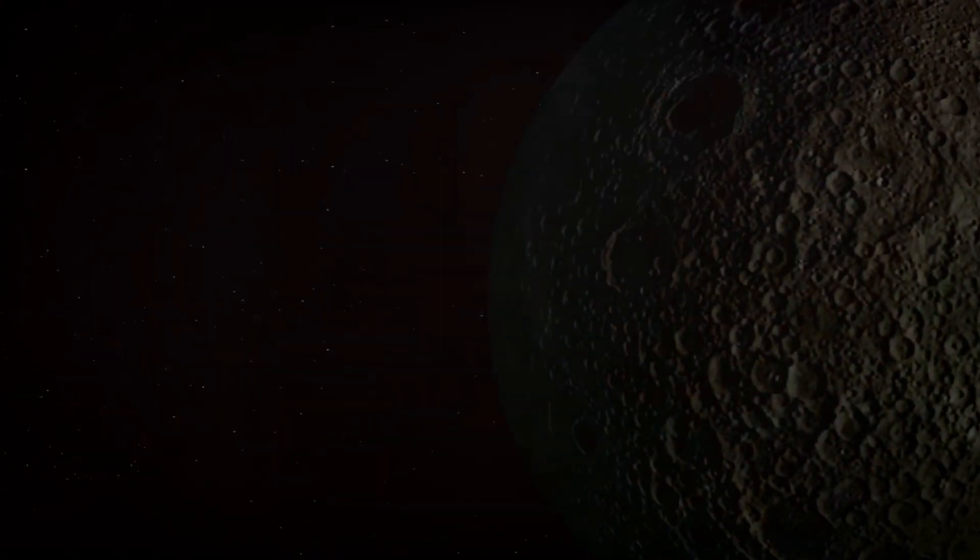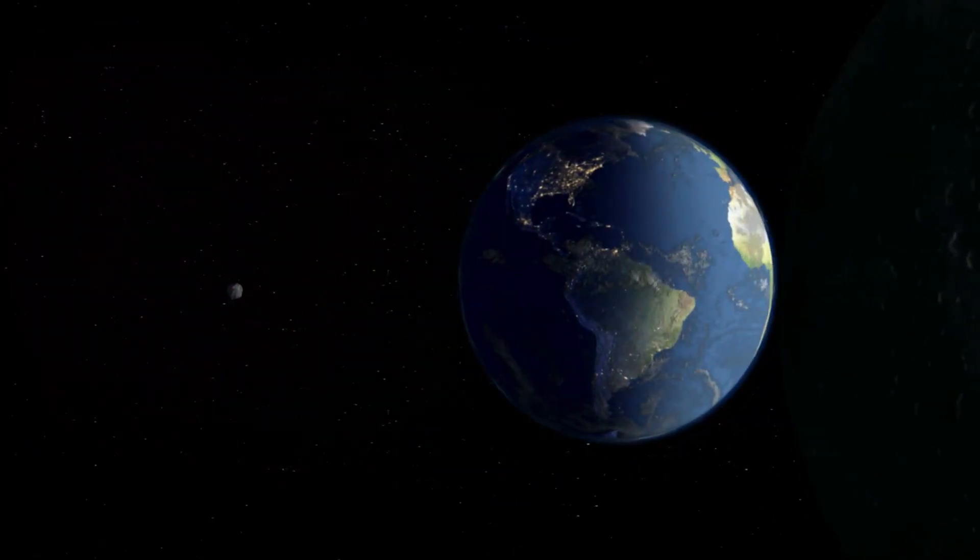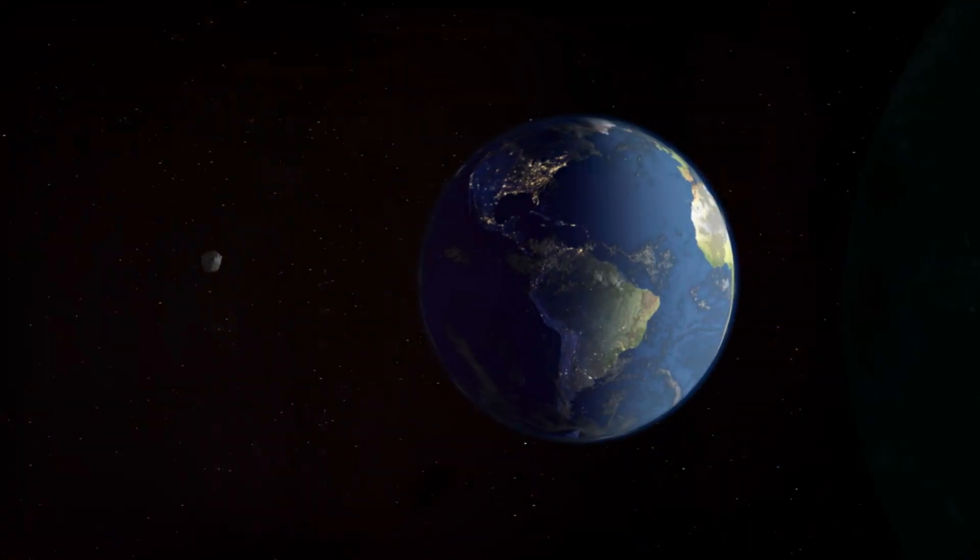Could Earth really be getting a second moon? Yes, you heard that right. NASA scientists have calculated that on Sunday, September 29th, our planet will capture a mini-moon in the form of a tiny asteroid called 2024 PT5.